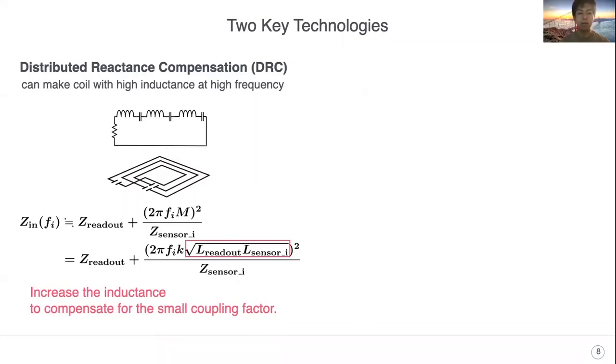DRC splits a single long coil into multiple short coils by inserting multiple capacitors to mitigate the wavelength limitations.